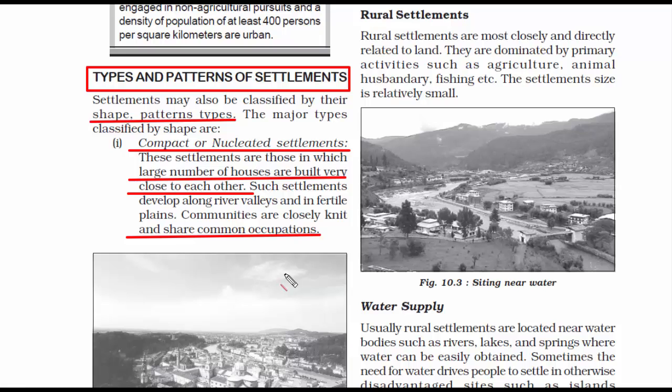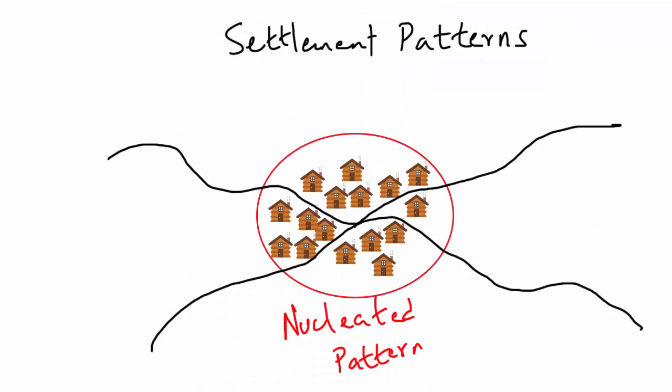In a compact or nucleated settlement, people largely share similar occupations. In a city colony, most people work in tertiary sectors like multinational corporations, government sectors, or businesses. Similarly, in villages, people are engaged in primary activities like farming, fishing, lumbering, mining, and animal husbandry. So in a compact or nucleated settlement, people share common occupations.